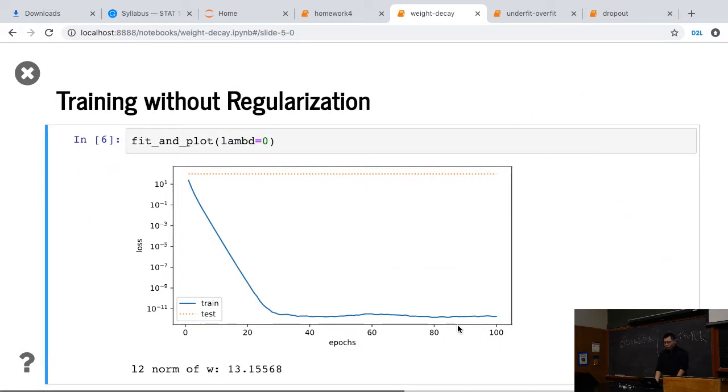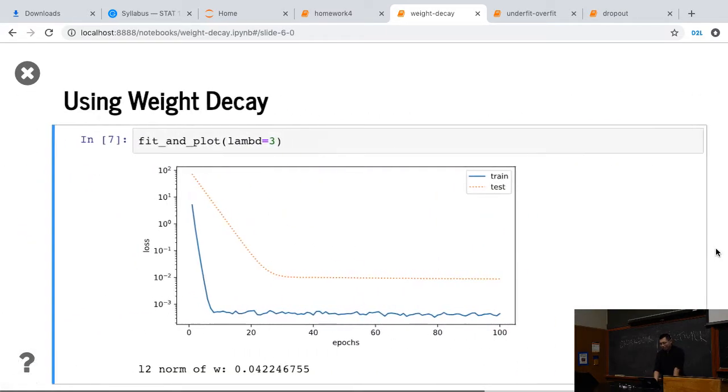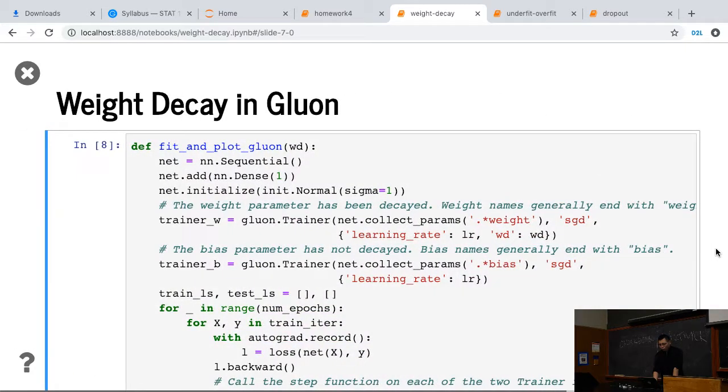So, if implementing from scratch, what we did is we just changed the loss function. And if you're going to use Gluon or using any deep learning library, we usually just tell the SGD function, that is, apply a weight decay, that we directly apply to the SGD function.